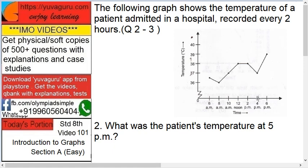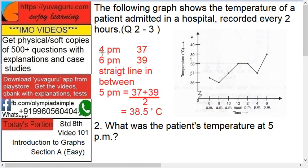5 p.m. is between 4 p.m. and 6 p.m. Let's solve this. At 4 p.m. it is 37 degrees at this point, and at 6 p.m. it's 39 degrees at this point.